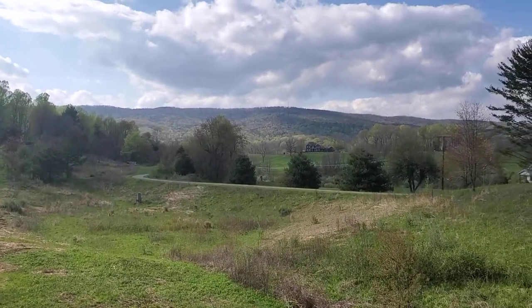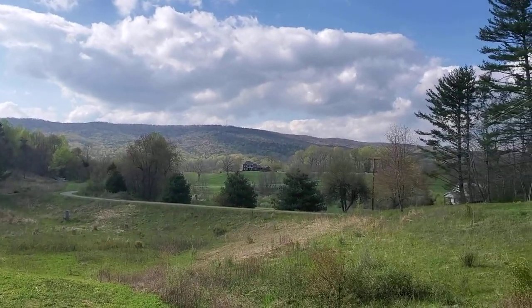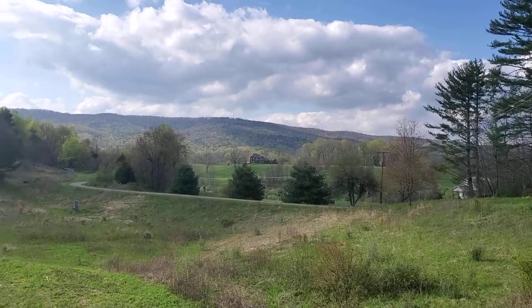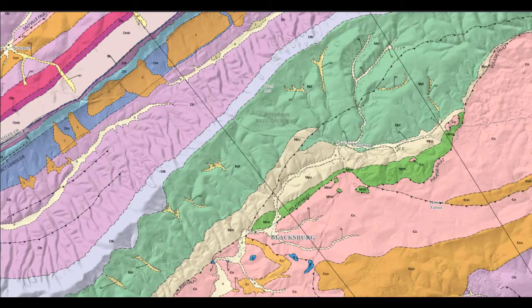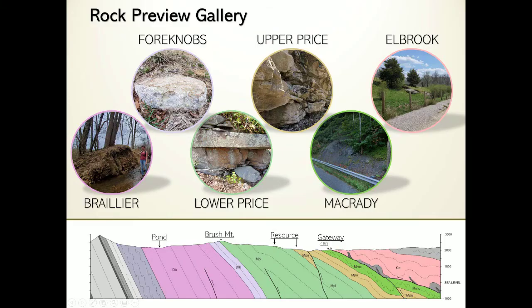Just north of Blacksburg, Brush Mountain peaks 500 meters above the Virginia Tech campus, exposing rock roughly 360 million years old. Its sovereign slope is bordered by the Pulaski Thrust fault, which once covered the mountain with older Cambrian limestone. However, this cover has been removed, and the mountain now stands well above Blacksburg. How did this sequence of events occur?